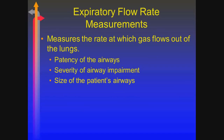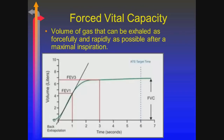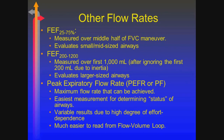Besides the lung volume measurements, we also measure the flow rates a patient can attain. Usually we do this to evaluate the severity of any airway impairment. This tells you the forced vital capacity. If I give you a tracing, you should be able to derive the FVC along with the FEV1. FEF 25-75 represents middle to small sized airways. FEF 200-1200 is large airways. Peak flow is what we usually use to determine if there's any airway improvement.